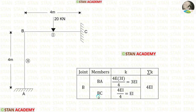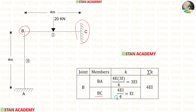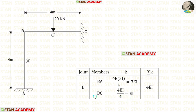Now let us find the stiffness for member BC. From joint B we look at point C, where there is a fixed support. If the far end is fixed, the formula is 4EI upon L. The length of BC is 4, and the moment of inertia is I, so the stiffness of BC is EI. Now let us find sigma K by adding these two values. After adding, we are getting 4EI.